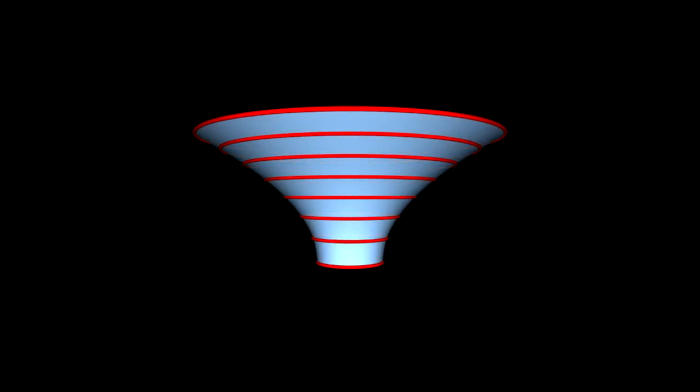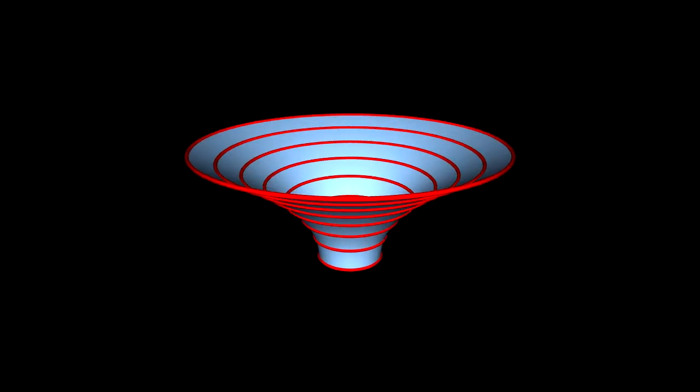This curved surface is called an embedding diagram, and it is a way to visualize the distortion of space around a black hole. Now, it is a curved two-dimensional surface embedded in a flat three-dimensional space.